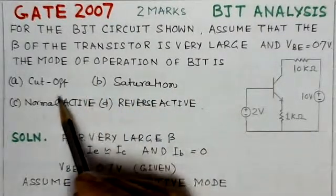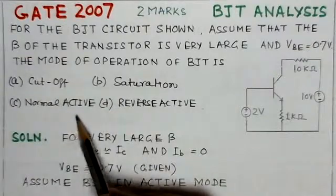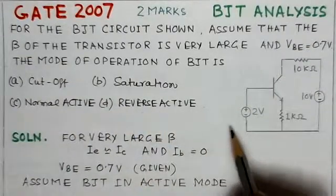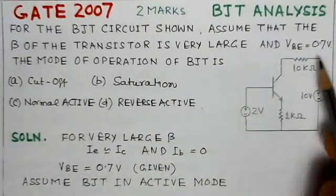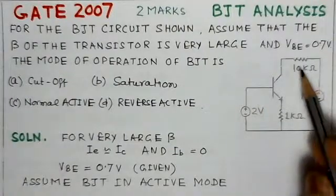There are four options here: cutoff, saturation, normal active, and reverse active. The corresponding BJT circuit is given here.